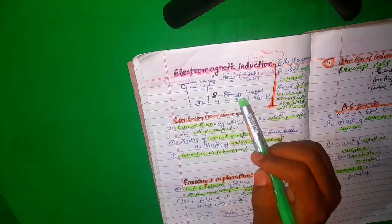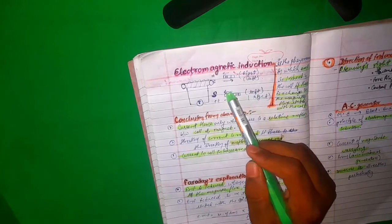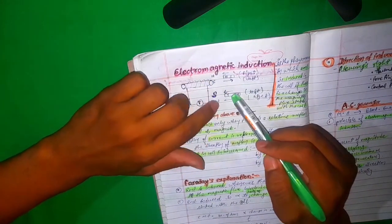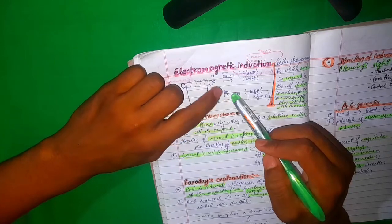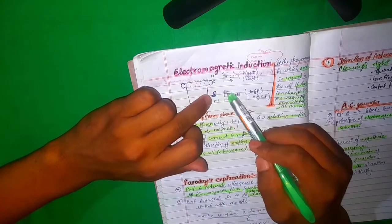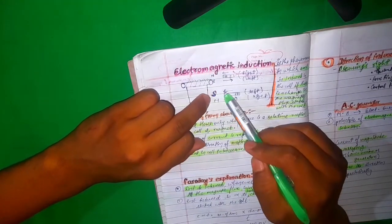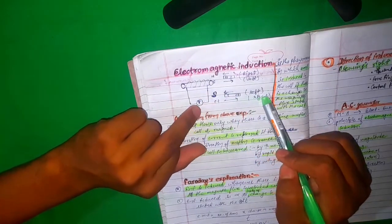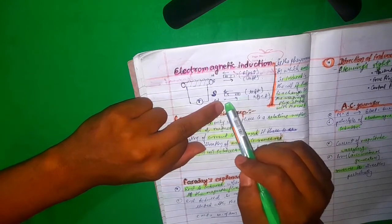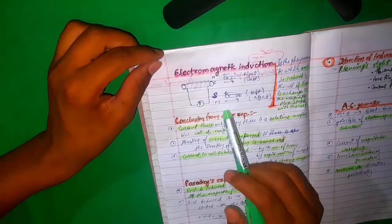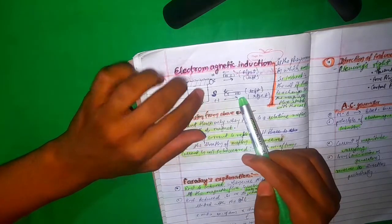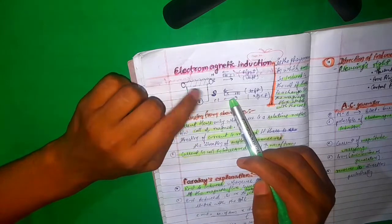When the south pole of the magnet faces the solenoid and moves toward it, to repel it the solenoid presents a south pole at the near end. The galvanometer deflects to the left. When the magnet with south pole is moved away from the solenoid — it is already repelling — so to oppose, we attract it. The solenoid presents a north pole, and the galvanometer deflects to the right.